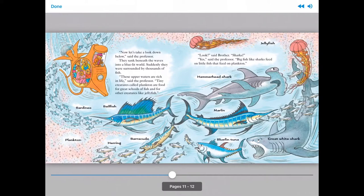Tiny creatures called plankton are food for great schools of fish and for other creatures like jellyfish. Look, said Brother. Sharks. Yes, said the professor. Big fish like sharks feed on little fish that feed on plankton.